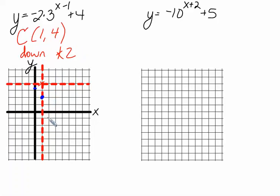So down 1, 2, 3, 4, 5, 6. There's our point. Draw it in. Make sure that we get close to that asymptote, but we don't actually touch it or cross it.